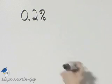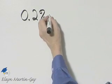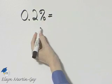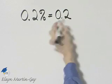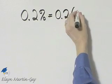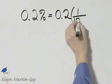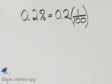Let's write this percent as an equivalent fraction, so keep in mind what the percent symbol means. I'll go ahead and write down my two-tenths, then remember percent means per hundred, so as a fraction, the percent symbol means 1 over 100.